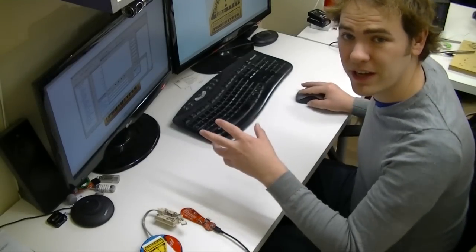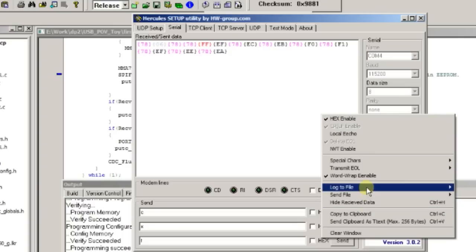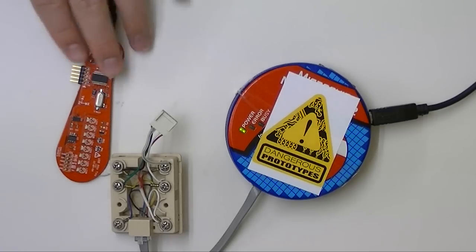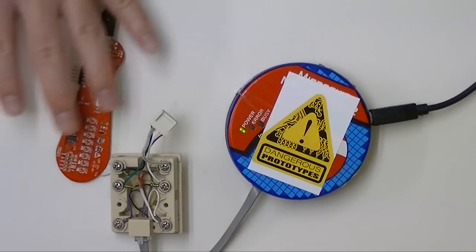What we're going to do is connect to the IR toy on COM4, simple serial terminal, and send it some commands. Now we're holding this flat. It's stuck with sticky tack down to the office table.